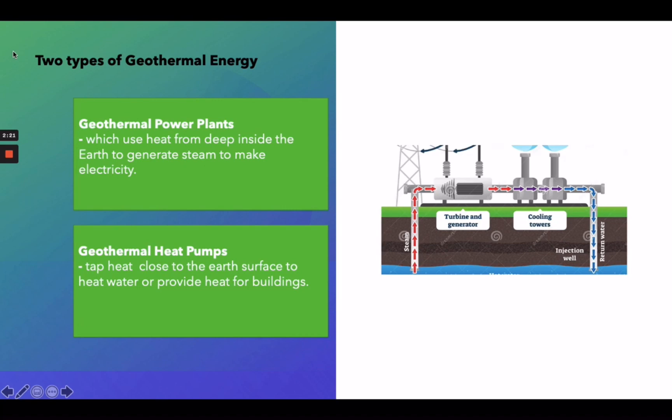In conclusion, geothermal power plants and geothermal heat pumps both harvest its energy underneath the Earth. Yet, for geothermal power plants, it has a large scale size and output that can generate electricity to cities or regions, while geothermal heat pumps usually provide heating and cooling for single homes.